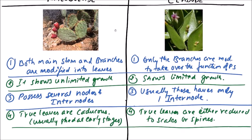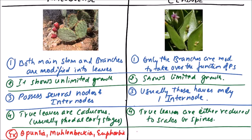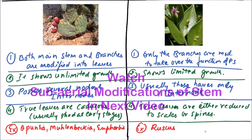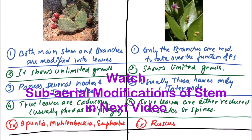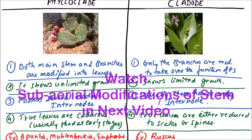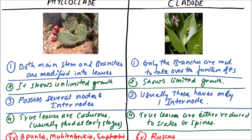Now for examples: phylloclades are found in Opuntia, Muehlenbeckia, and Euphorbia. Cladodes are found in Asparagus and Ruscus. This is the difference between cladodes and phylloclades. Thanks for watching this video. The next video will discuss the sub-aerial modifications of the stem.